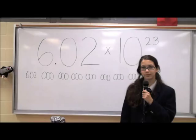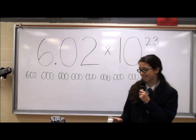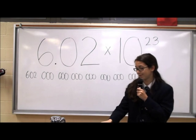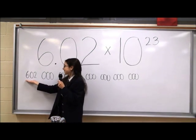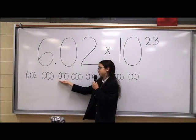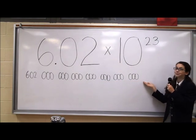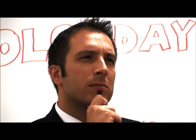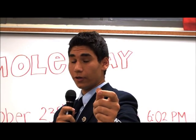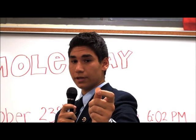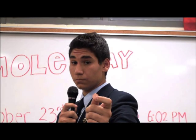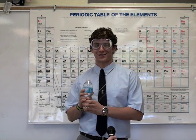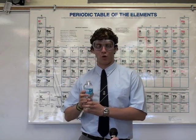Take a look at this! For example, take this beaker of salt — it contains 1 mole, or 6.02 times 10 to the 23rd ions of salt. Did you know that 1 mole of pennies can be stacked 4 million times between the Earth and the Sun? Or that in this water bottle there are 28 moles of water?